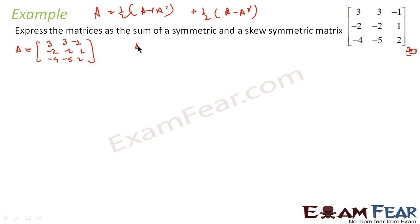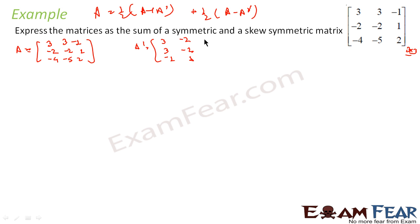Now I have to find A' because I need to use A' in the formula. Converting rows to columns: row 1 [3, 3, -1] becomes a column, row 2 [-2, -2, 1] becomes a column, and row 3 [-4, -5, 2] becomes a column. So A' = [3, -2, -4; 3, -2, -5; -1, 1, 2].